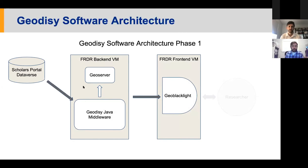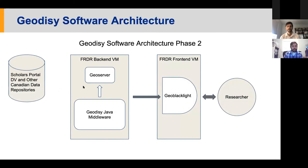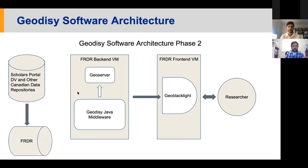Phase two, which we are working on at the moment, changes things. We are no longer just doing Scholar's Portal — we are going to include a whole bunch of other institutions. Originally we had a different plan, but we are now going to harvest directly from the FRDR harvester. They're already harvesting from a bunch of repositories, so we can just connect to them, pull the metadata and geospatial information into our middleware. From there it's the same as the first part.